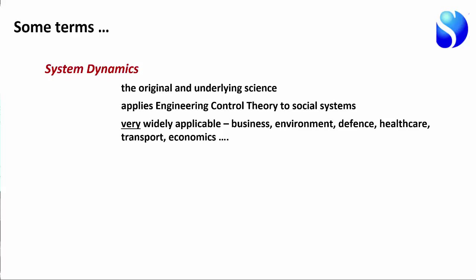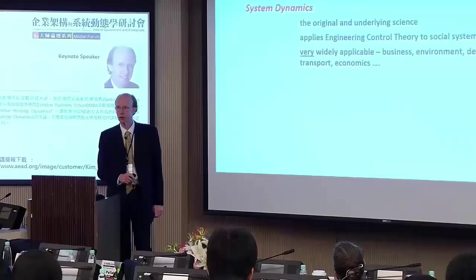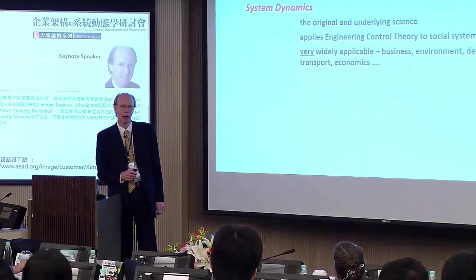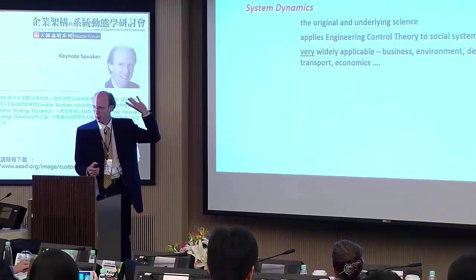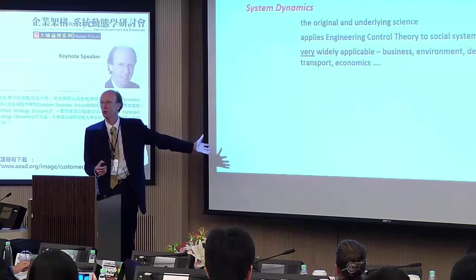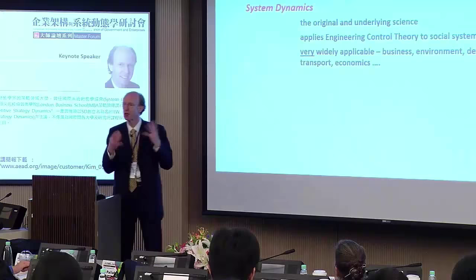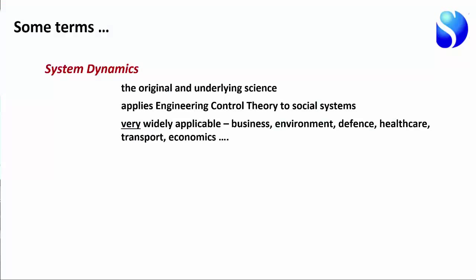The underlying science here is known as system dynamics. It is the application of engineering control theory to economic and social systems. It was developed in the 1960s by a truly wonderful and very clever professor at MIT by the name of Professor Jay Forrester. Everything I'm going to say this afternoon, I owe to Professor Forrester. There's a phrase that you move forward by standing on the shoulders of giants, and Professor Forrester is the giant on whose shoulders I'm standing.